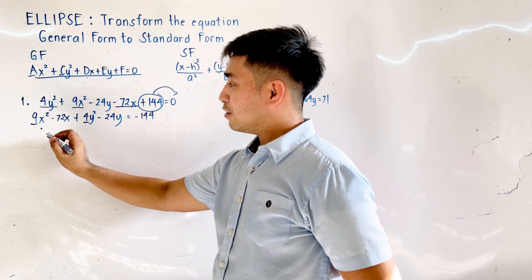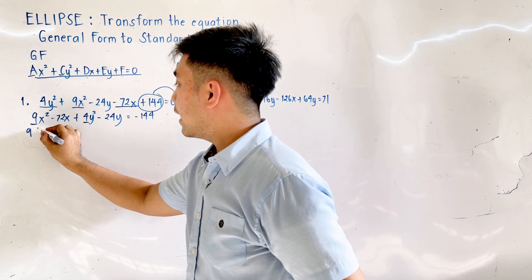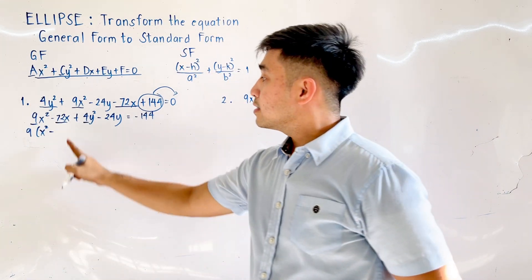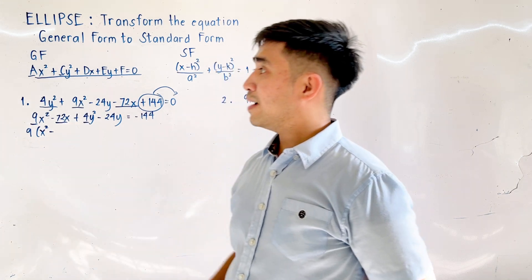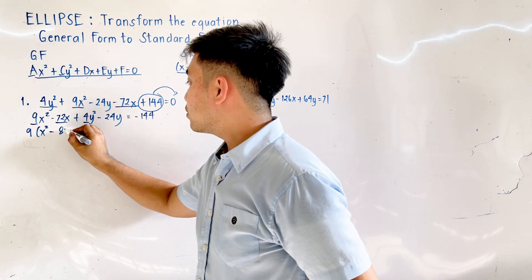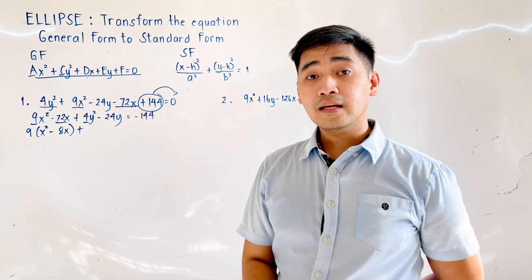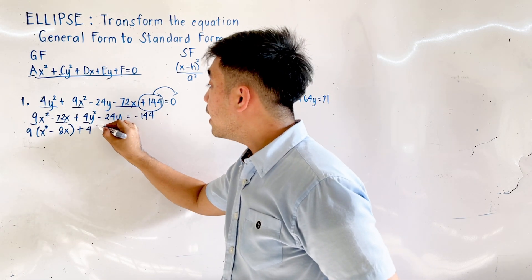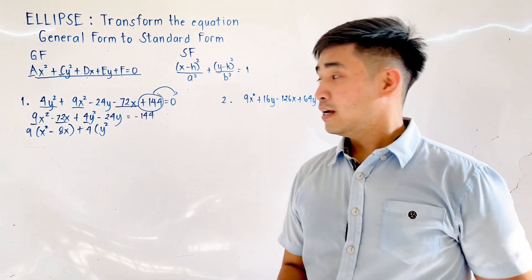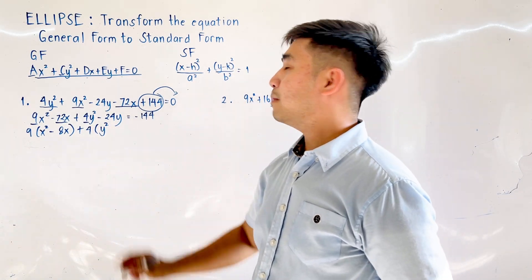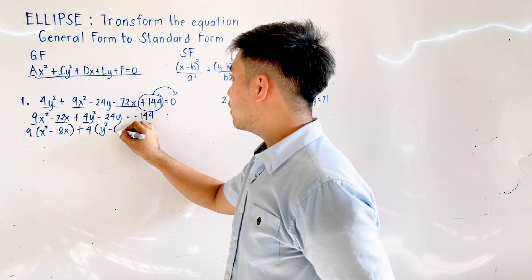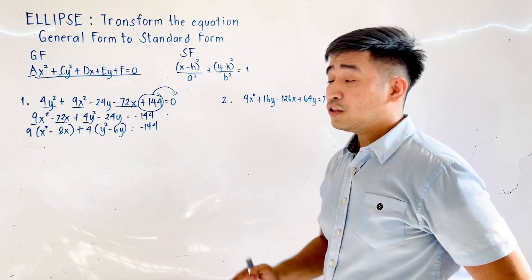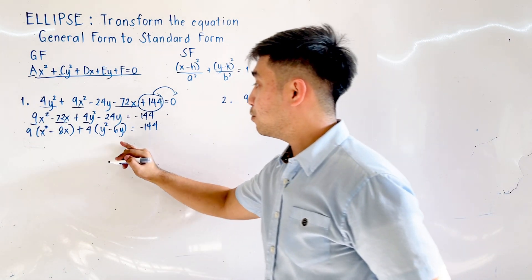The coefficient of x² is 9, so factor out 9: that becomes 9(x² − 8x). Then for y, since we have 4y², factor out 4: that becomes 4(y² − 6y), which equals negative 144. We are now ready to complete the square for the x variable and for the y variable.